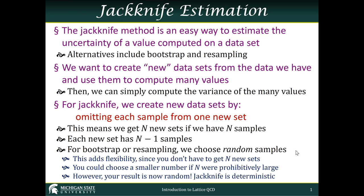Another disadvantage of bootstrap or resampling is that your result will be random. You've made these random samples, and when you repeat it, or if somebody else tries to reproduce your calculation, they are going to get a slightly different result. Jackknife, on the other hand, is completely deterministic, and if you're doing it correctly, you ought to be able to get agreement to floating point precision.